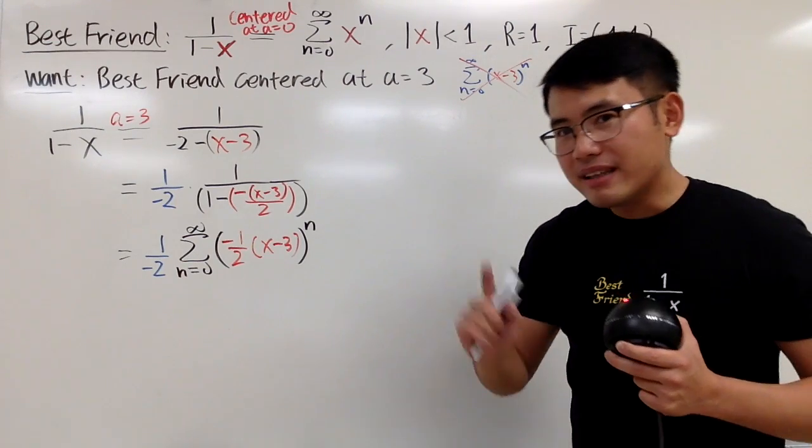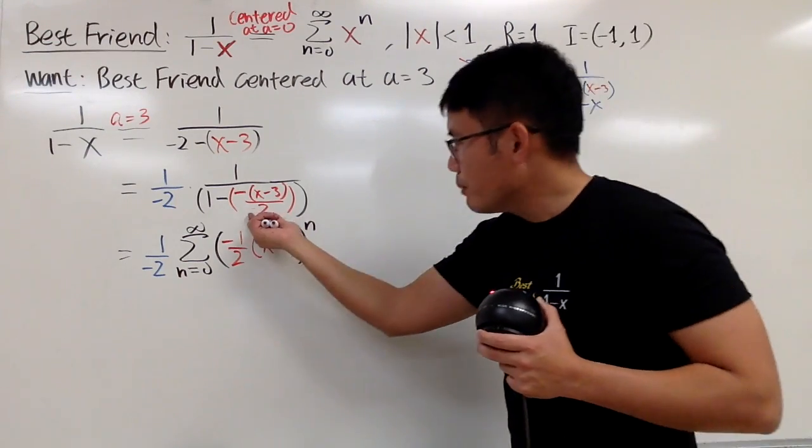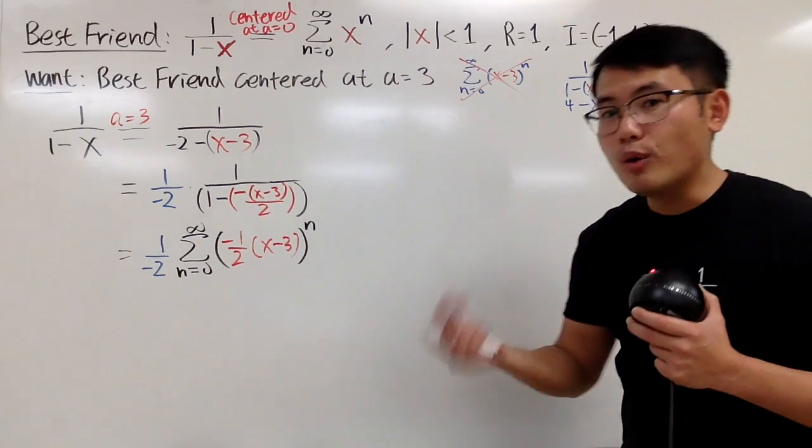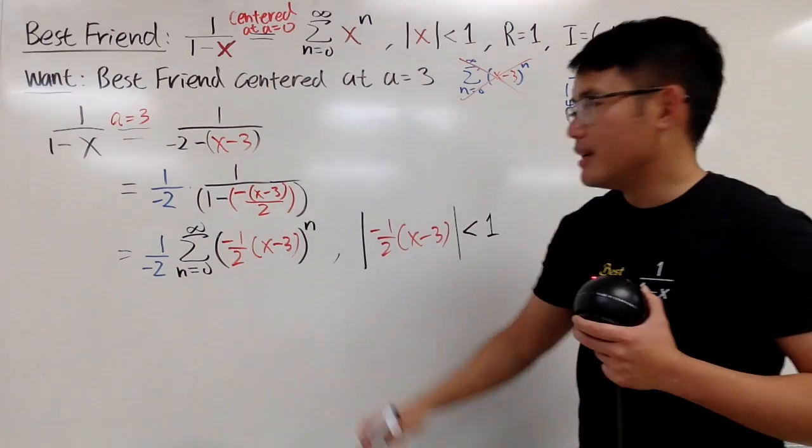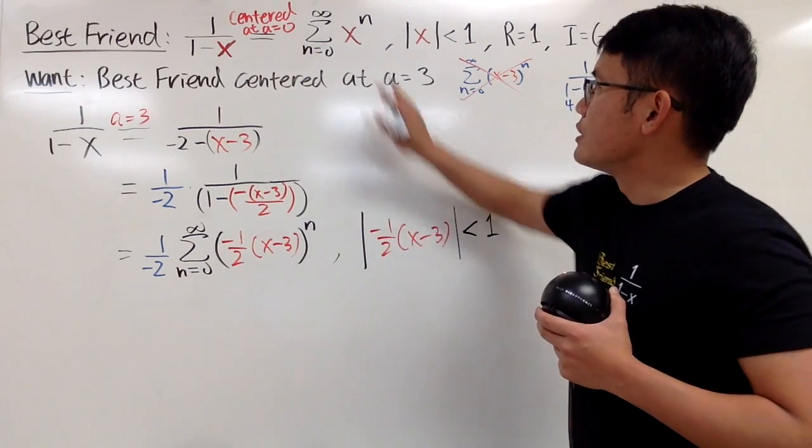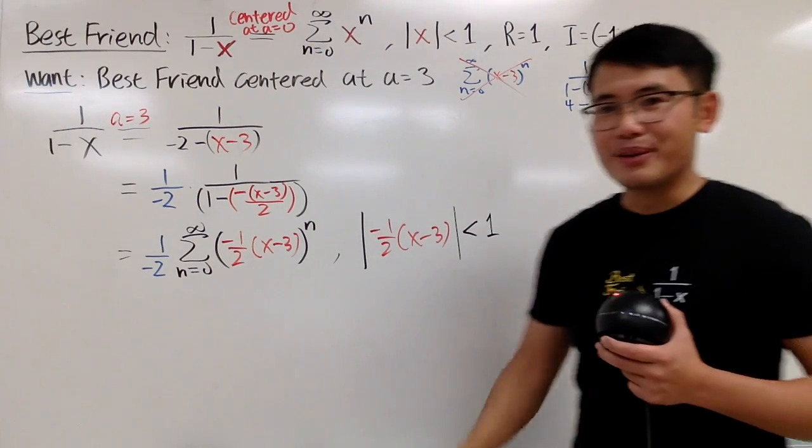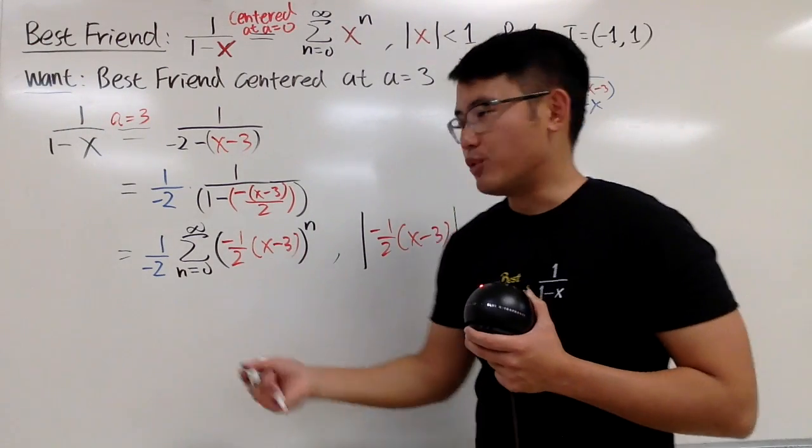Okay, another thing you have to know is, you should also plug in this right here, so you can also figure out the radius of convergence. So, from here to here, it's just pretty much applying all that. That's all. And now the rest is just fix this right here.